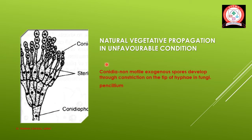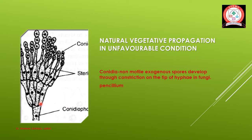The second type is conidia. Conidia are non-motile, exogenous spores developed through constriction at the tip of hyphae in fungi. Hyphae is the plant body or thallus of a fungus. A constriction develops at the tip of the hyphae and is converted into a conidium.